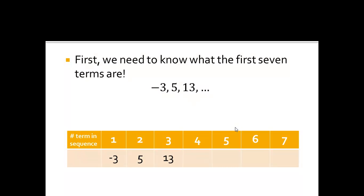So since I know the sequence is arithmetic, I know it's moving forward by addition or subtraction. So between negative 3 to 5, I'm adding 8, same thing here.